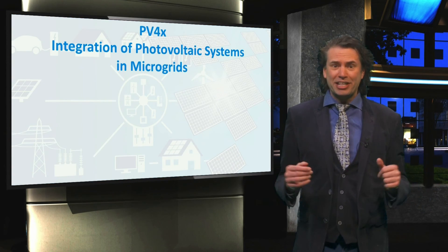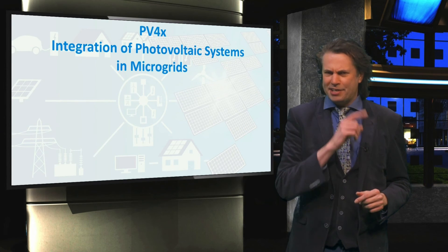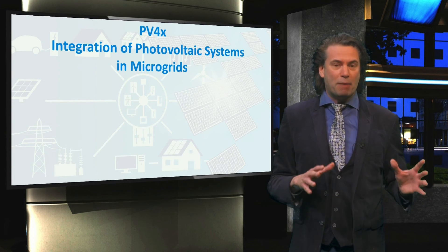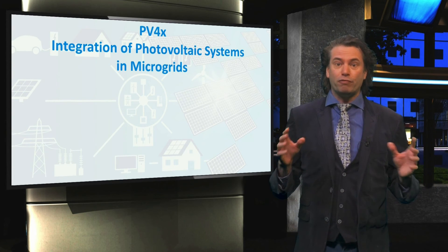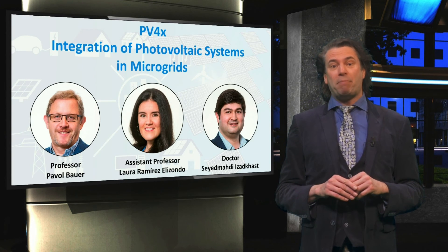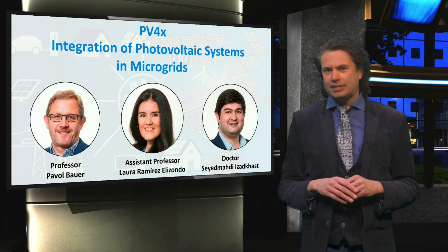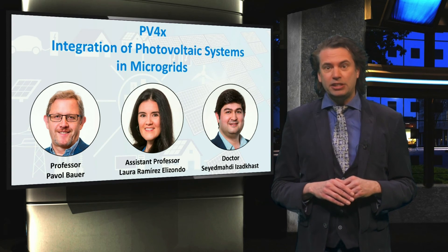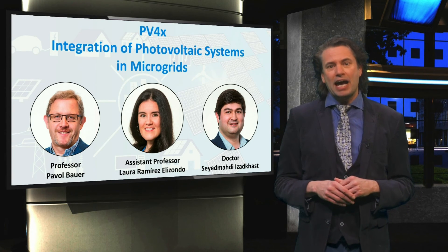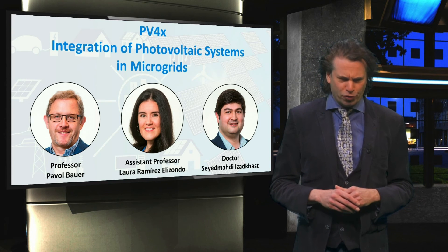The fourth course is called Integration of Photovoltaic Systems in Microgrids. In this course you will learn about various aspects of AC and DC microgrids. The lecturers for this course will be Professor Pavel Bauer, Assistant Professor Laura Ramirez, both from the Group DC Systems Energy Conversion and Energy Storage, and Seemadit, a lecturer at our university.